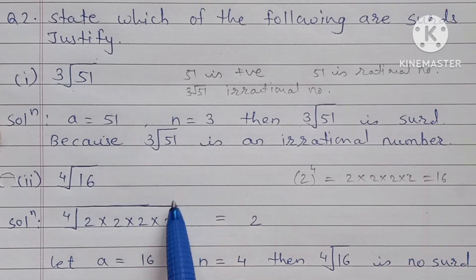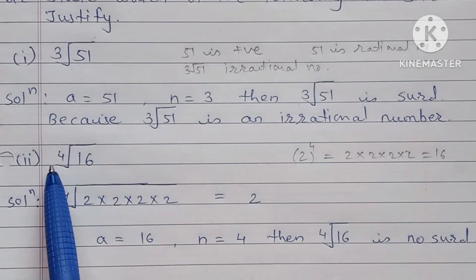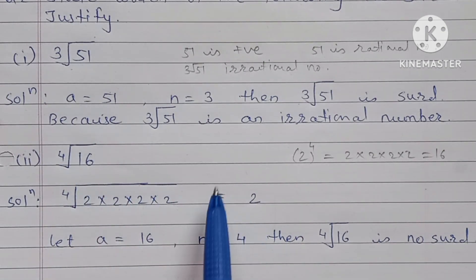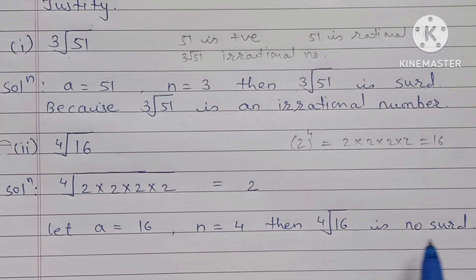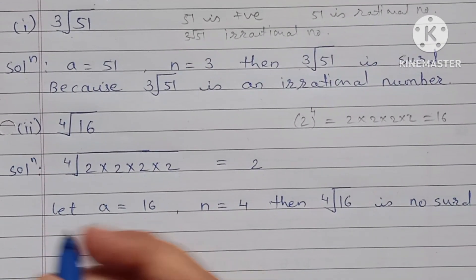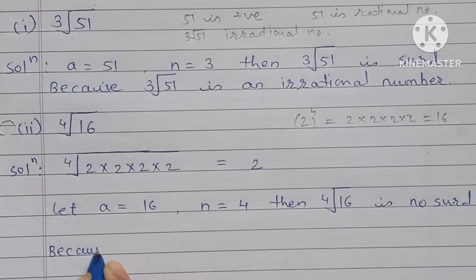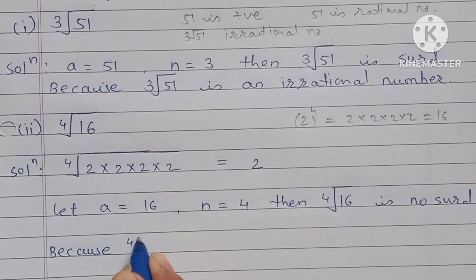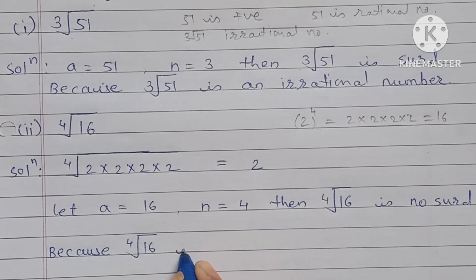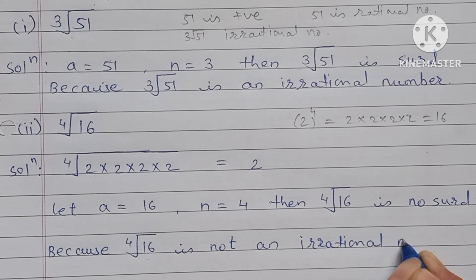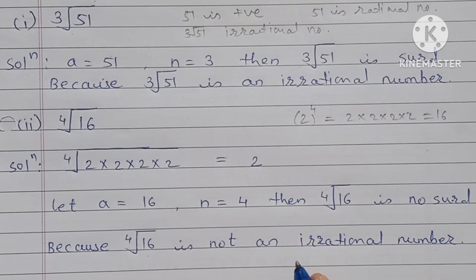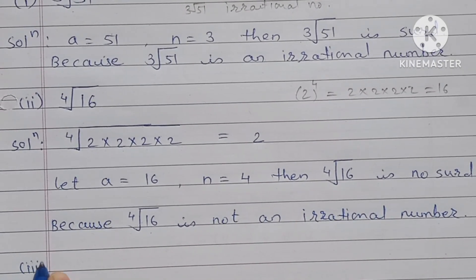16 is positive, but the fourth root of 16 gives answer 2, which is a rational number. Therefore it is not a surd — because fourth root of 16 is not an irrational number. Now question number 3: fifth root of 81.